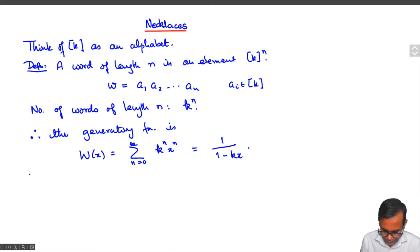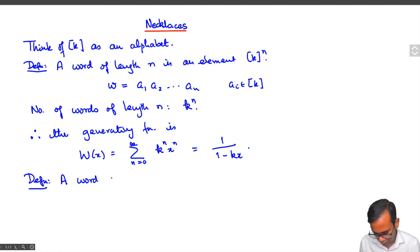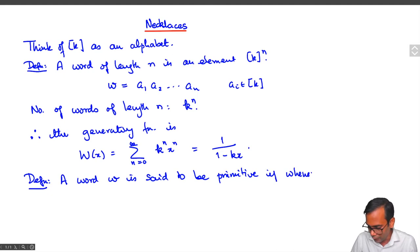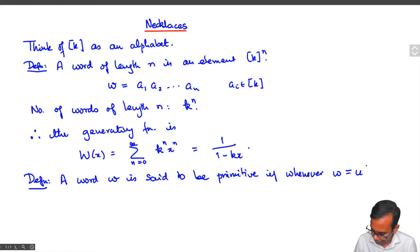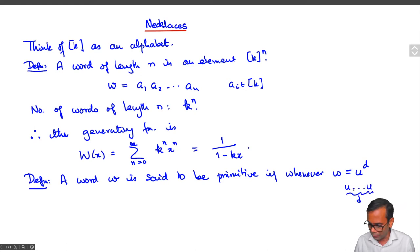A word is said to be primitive if it is not obtained by repeating a shorter word a certain number of times. Formally, we would say that whenever w is written as u to the power d — whereby u to the power d means take the word u and repeat it d times, giving a word of length d times the length of u — then d must equal 1.